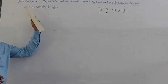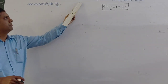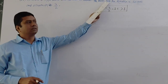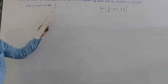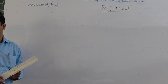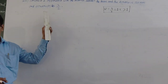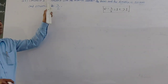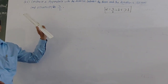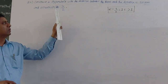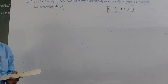Today's question is: construct a hyperbola with the distance between the focus and the directrix as 50mm and eccentricity as 3 by 2. In this question, you have to construct a hyperbola. Sometimes it is mentioned to construct a curve — if so, you have to read the question carefully and then decide which curve you have to draw.